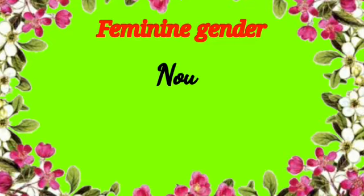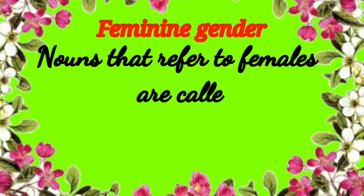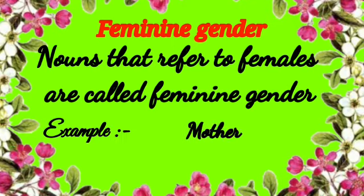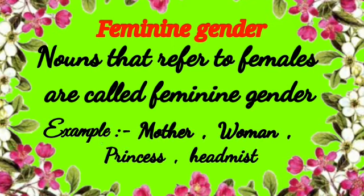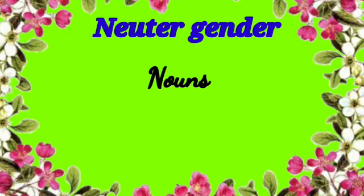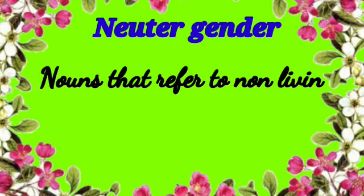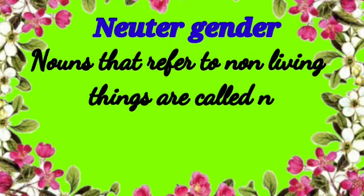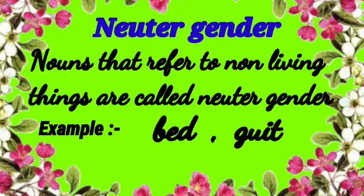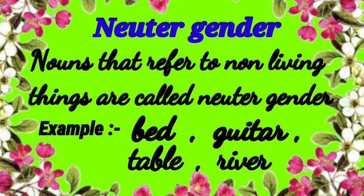Nouns which name non-living things, which are neither male nor female, are said to be of the neuter gender. Examples: bed, guitar, table, river, etc.